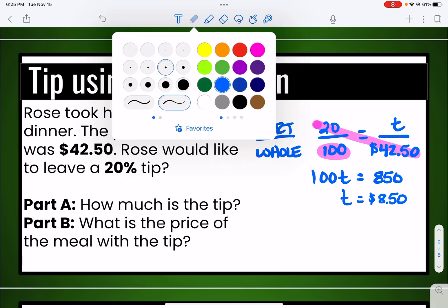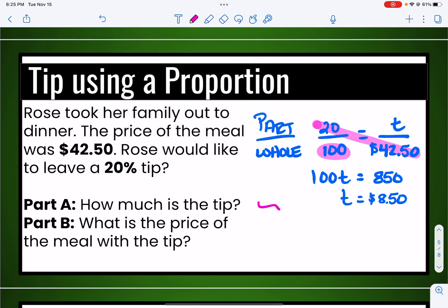Now for part B, we're going to figure the total cost. To find out what the total cost of the meal is with the tip, we're going to have to add the tip to the before price.